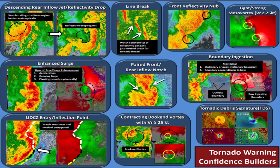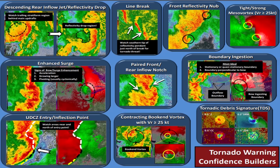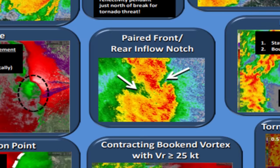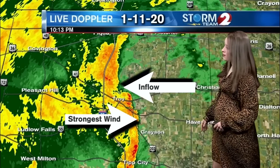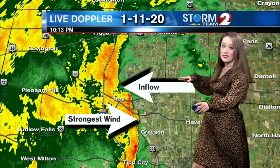Take a look at some of these tornado confidence builders. Some helpful indicators include areas where there are breaks in the line of storms — the southern tip may be the source of a spin-up tornado. Inflow notches are areas where air is rushing into the storm and can intensify rotation.